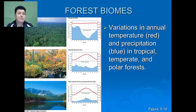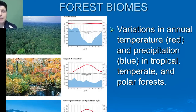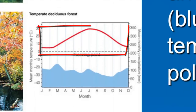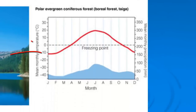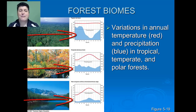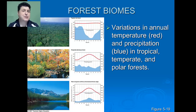When we look at the climatograms for our forest biomes, we're going to see similar patterns. The tropical rainforest is going to have consistently high and warm temperatures. The temperate deciduous forest is going to have seasonal changes. Our polar evergreen or boreal forest is also going to be seasonal, but much of the seasonal changes are below zero — it's going to be a very cold environment. Each of the forest biomes have pretty consistently high levels of precipitation, especially when compared to our desert and grassland biomes.